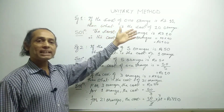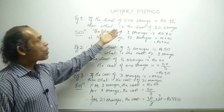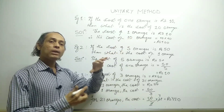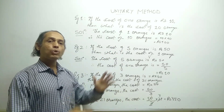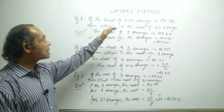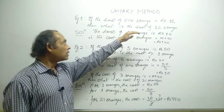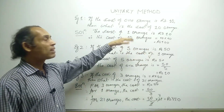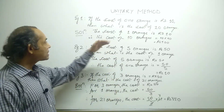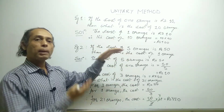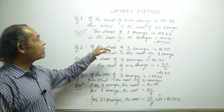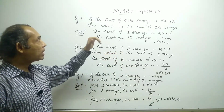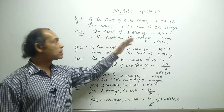Let us look at example number one. If the cost of one orange is rupees 10, then what is the cost of 10 oranges? In the unitary method we have two cases. Case one is going from one to many — we have the price of one orange and we need to find the price of many oranges. Case two is many to one — we have the cost of more than one orange and need to find the cost of one orange.